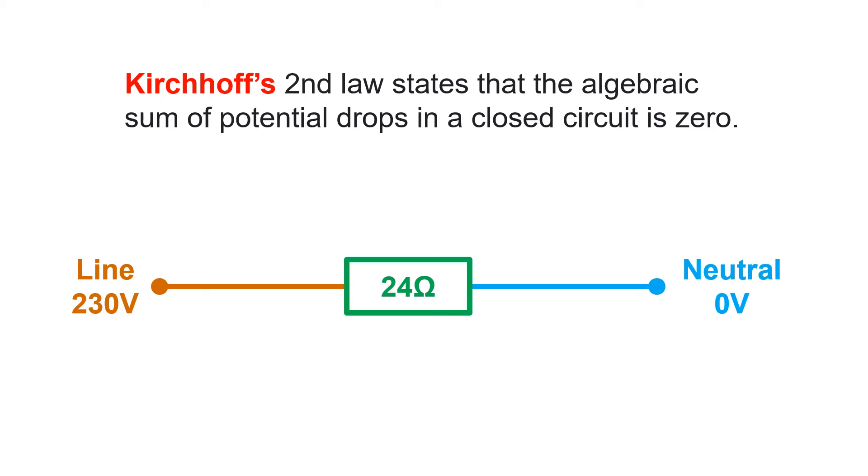Finally, adding all those voltage drops proves Kirchhoff's second law, which states that the sum of potential drops—and we refer to voltage as potential difference—in a closed circuit is zero.